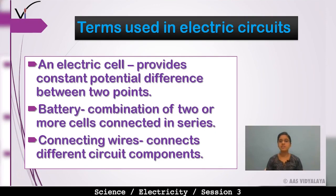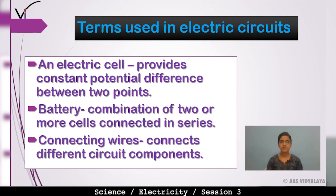Now, what are the terms used in an electric circuit? First is the electric cell — it provides a constant potential difference between two points. Second is the battery — a battery is the combination of two or more cells connected in series. A battery also provides a constant potential difference between two points.